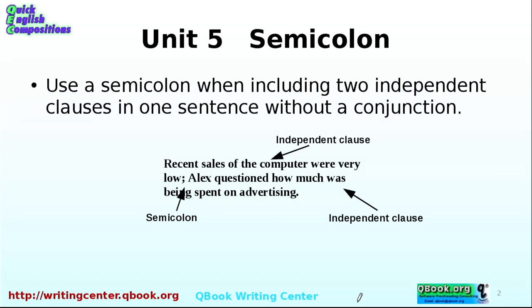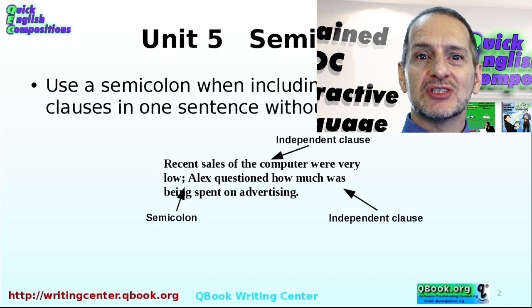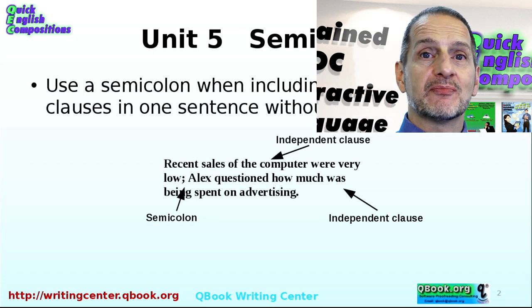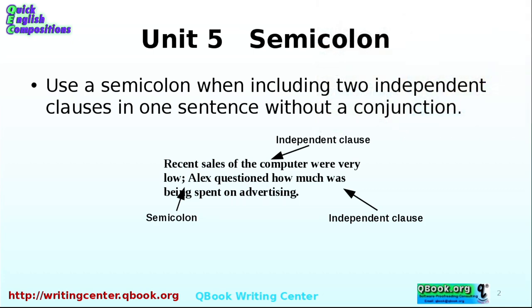The semicolon has a special use, which is to combine basically two sentences. Remember we talked about combining two independent clauses with a comma and a conjunction. But a semicolon lets you do that without using the conjunction — you just take two sentences basically and put them together. Here's a perfect example.